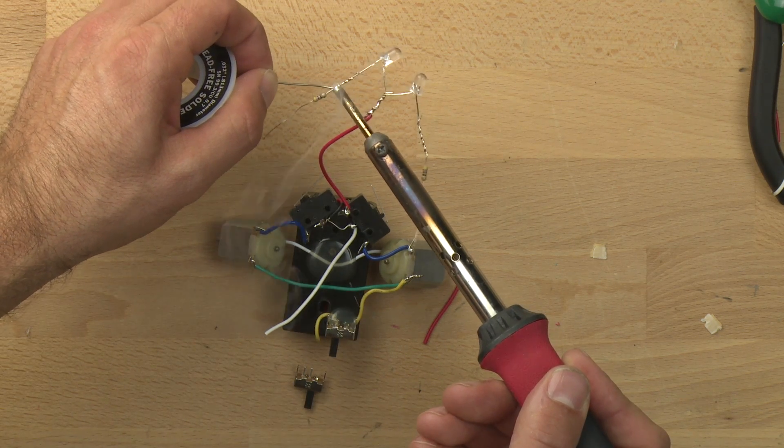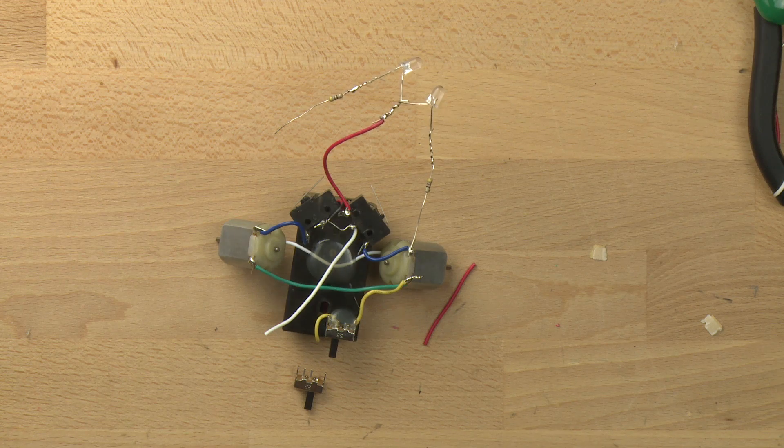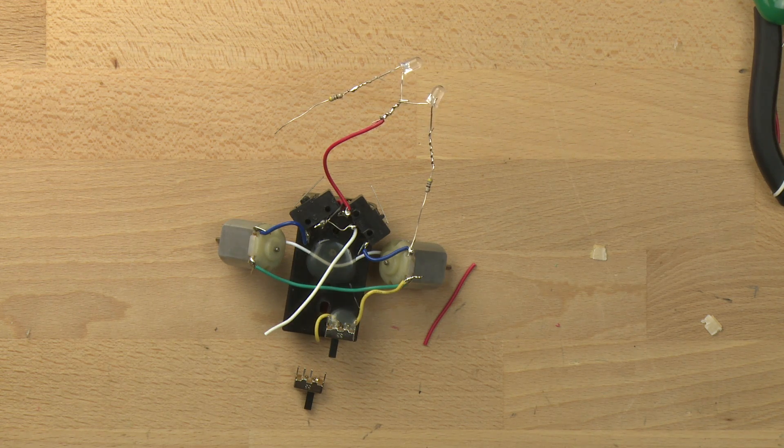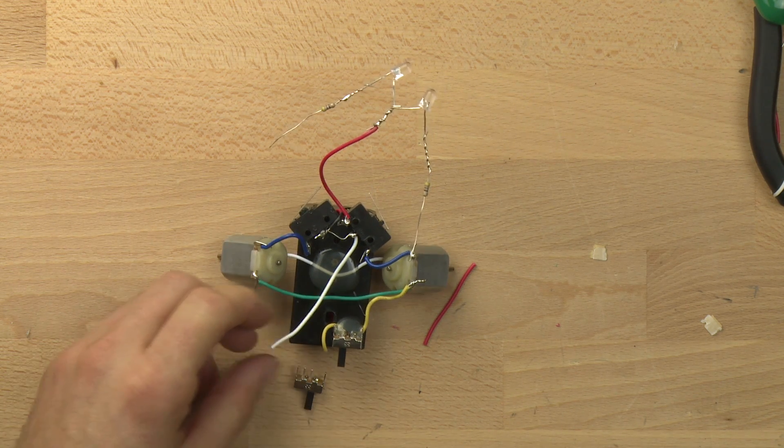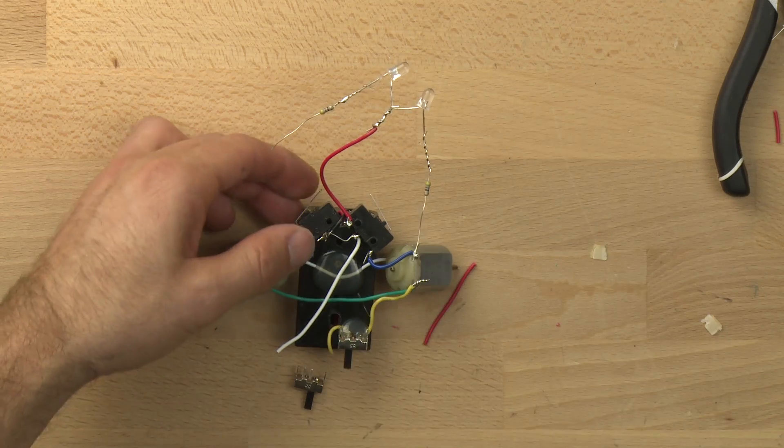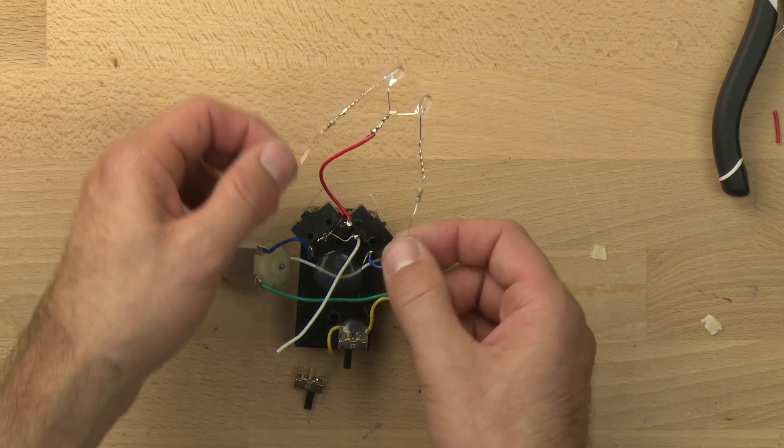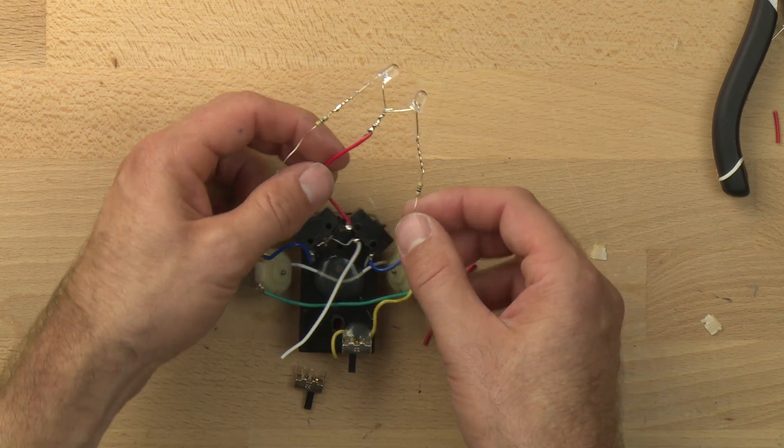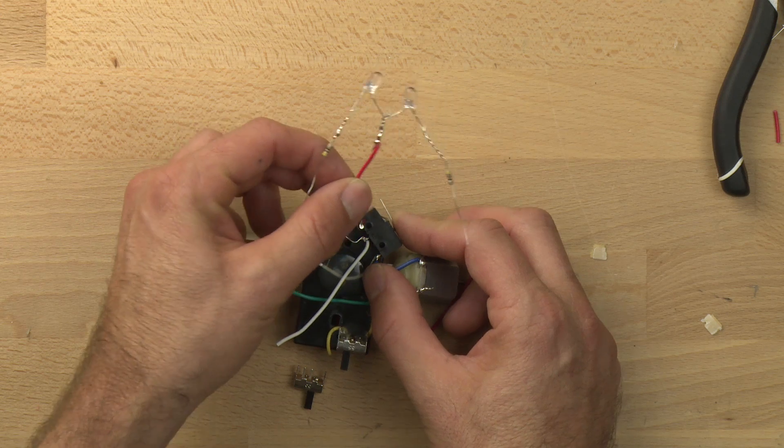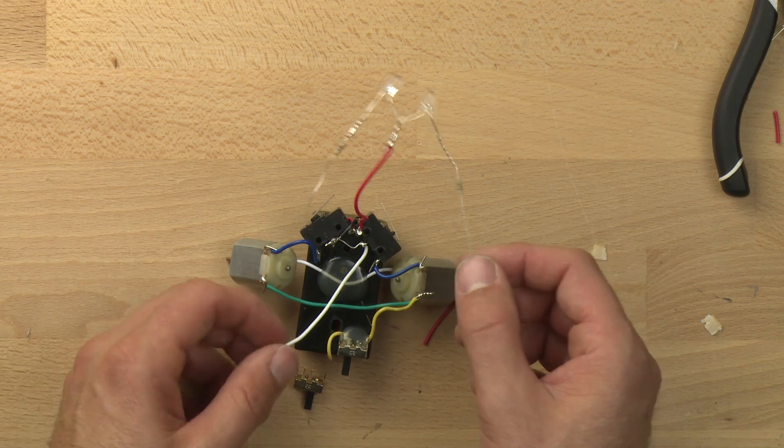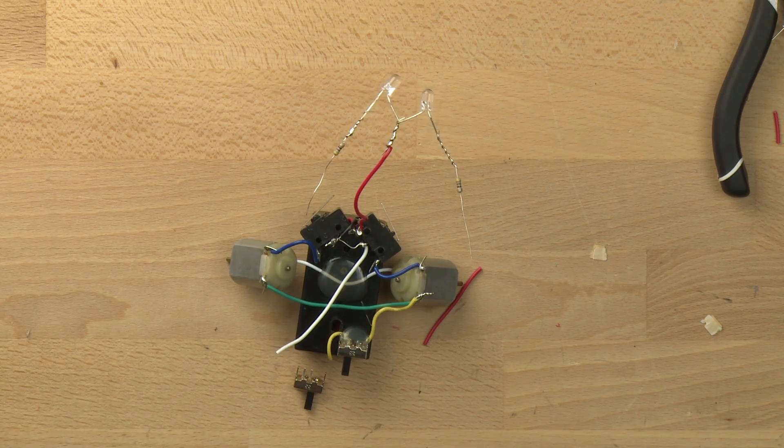You can actually see the solder wick up and down between the wires. Okay, so we need to connect another wire here to these. Let's make that a white wire.